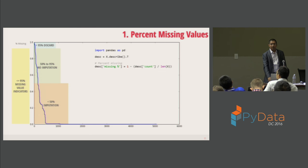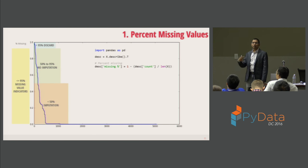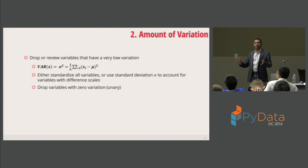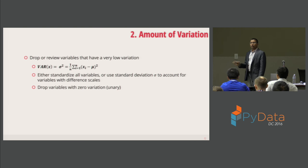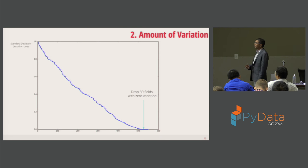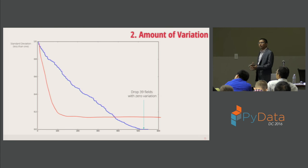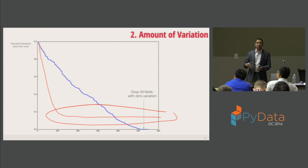In Python, it's easy using pandas. If you have X as your data matrix, you can do X.describe() to get the non-missing count and calculate percent missing. The second technique is amount of variation. If variables don't vary much, they may not carry much information and can be dropped. If your data is standardized, look at variance; otherwise look at standard deviation. In this dataset, about 500 variables had a standard deviation less than one. There were also 39 variables with zero variation — those should definitely be dropped as they add nothing to the model.